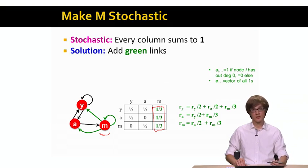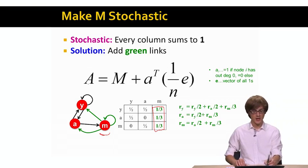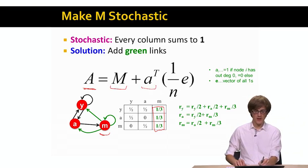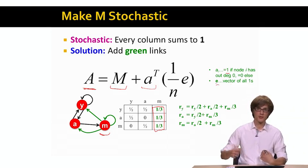The way we can think about this in terms of equations is that basically, we say, we define a new matrix A, where we take our previous matrix M. And now, I introduce two pieces of notation here. First, I have this vector A, where the ith component of vector A equals 1, if node i has out degree 0, if node i is a dead end, and otherwise it has value 0. And then this vector E is just vector of all 1s. So it's a vector where every component has a value of 1.